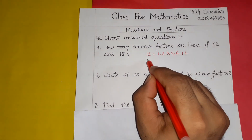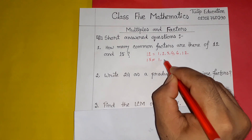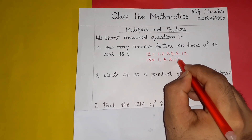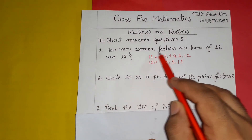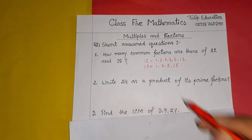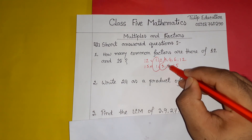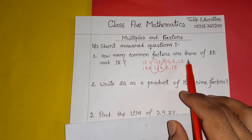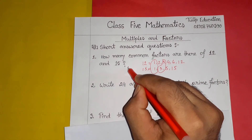At the same time, 15 can be divided by 1, 3, 5, and 15. Now the question asks for common factors — the numbers common to both. Those are 1 and 3. So the answer is: there are 2 common factors of 12 and 15.